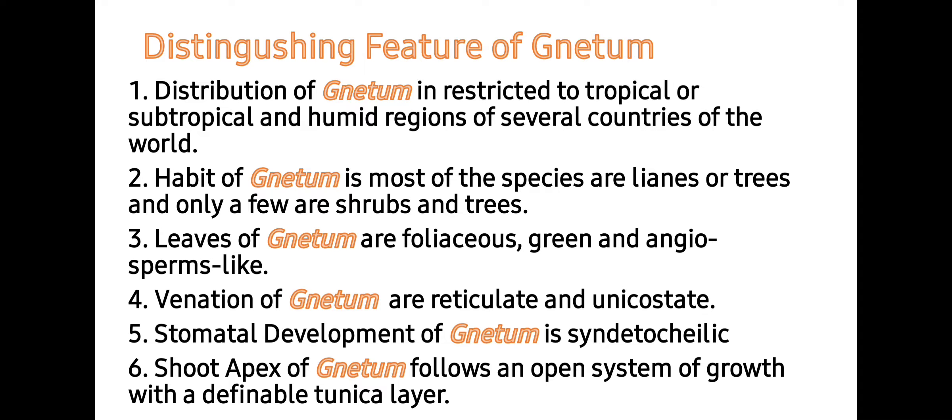Venation of Gnetum is reticulate and unicostate — meaning there is one prominent vein from which other veins arise. Stomatal development of Gnetum is syndetocheilic type. In this type of development, guard cells as well as subsidiary cells develop from the same single mother cell. The shoot apex of Gnetum follows an open system of growth and a definite tunica layer is developed.